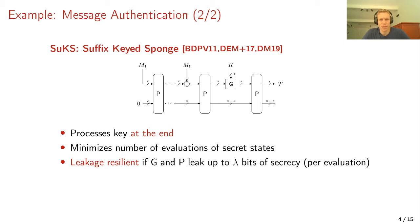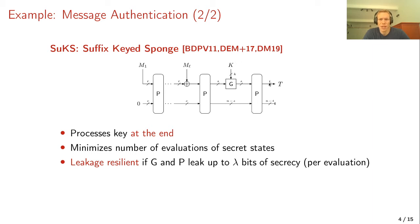SUCKS is secure under the random permutation model even if G is an XOR, though XOR is not really leakage resilient. We proved that SUCKS is leakage resilient if G and P leak up to lambda bits of secrecy per evaluation. Because the number of evaluations of secret states is limited and each new message very likely produces a new state, G and P only need SPA security — a lighter level of protection — and we still get a leakage-resilient scheme.